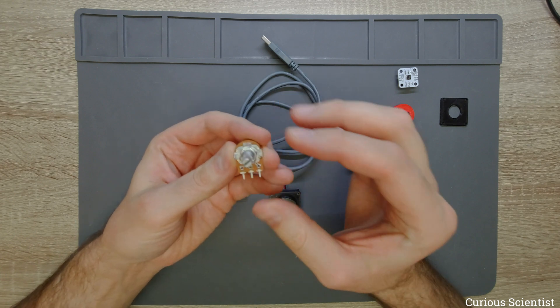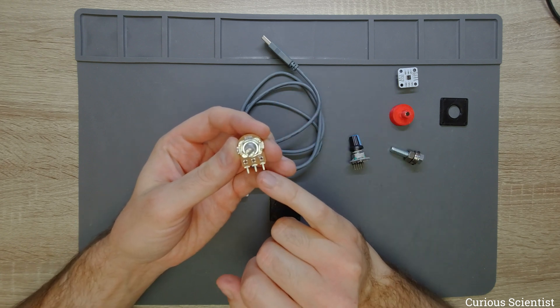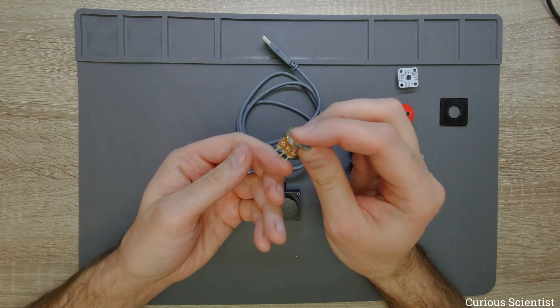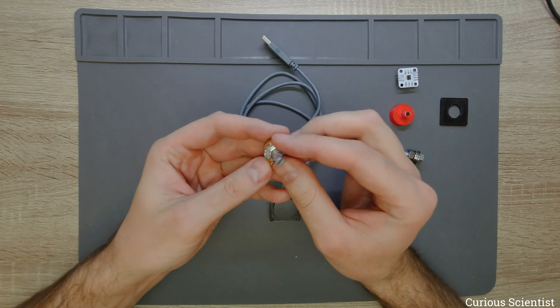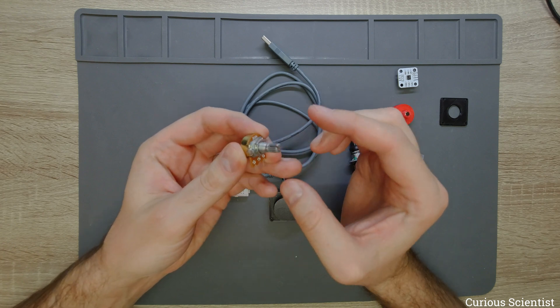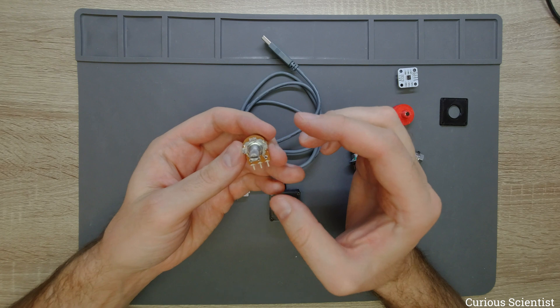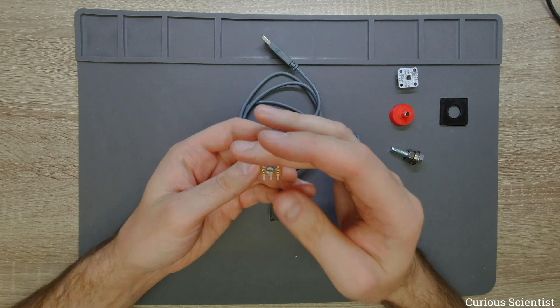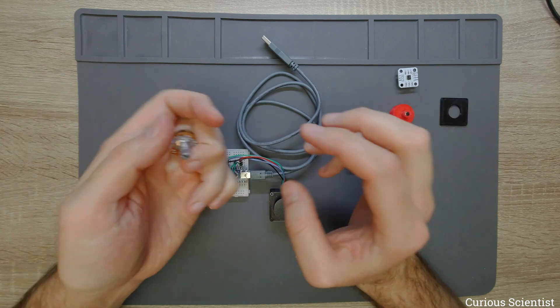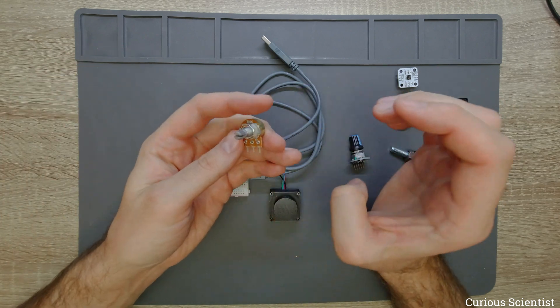And then when you move this to the maximum, then you shorted out the other two sides and you read the maximum resistance on the wiper and the other side of the potentiometer. But, wherever you move the knob of the potentiometer or the shaft of the potentiometer, you always know the absolute position, which is always reflected by the output resistance of the potentiometer.